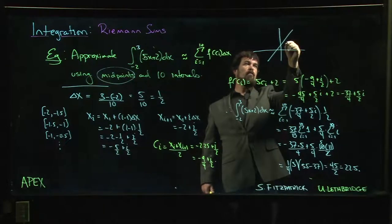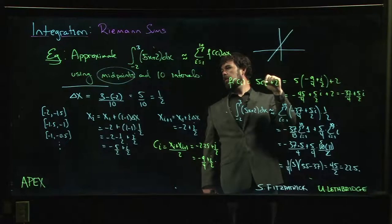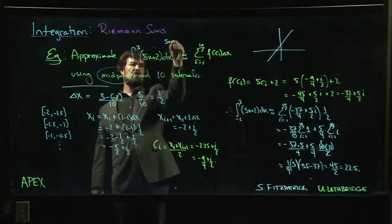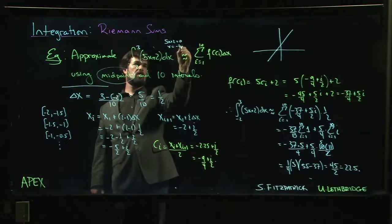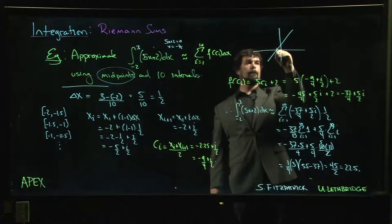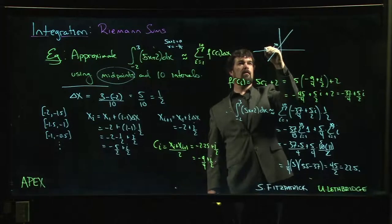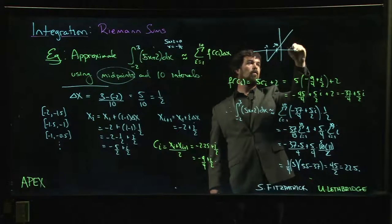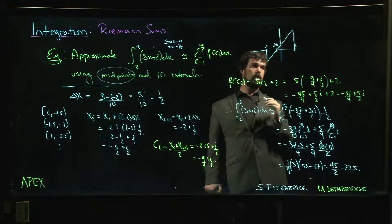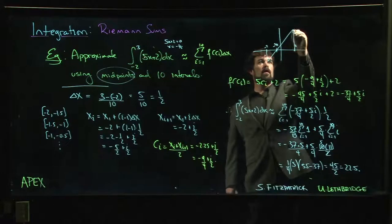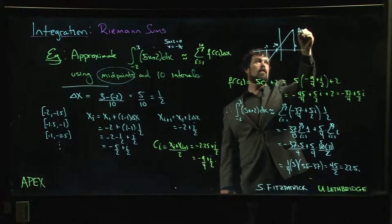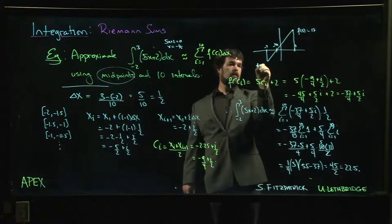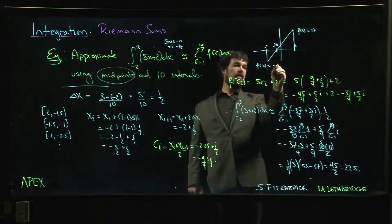We get something like this. So our area is, so the y-intercept is going to be what? When 5x plus 2 equals 0, x is going to be minus 2 over 5. Minus 2 over 5. Here's minus 2. Here's plus 3. And you can actually work out the area of these two triangles.